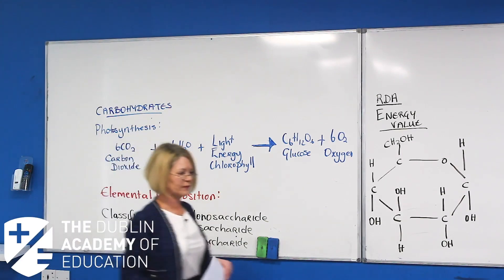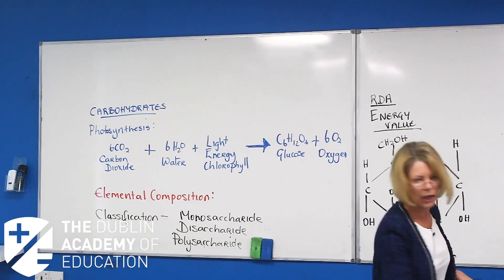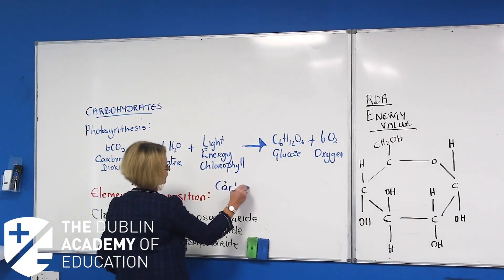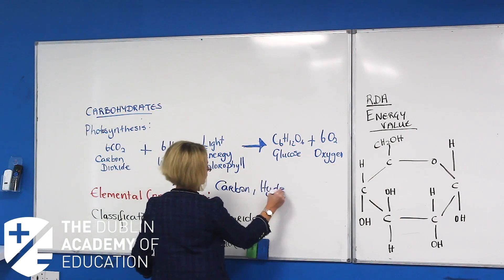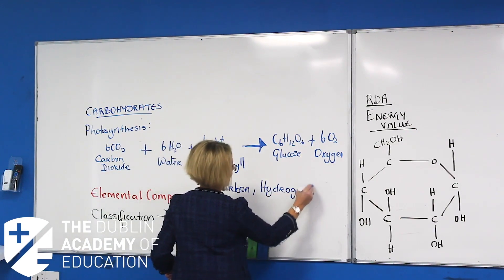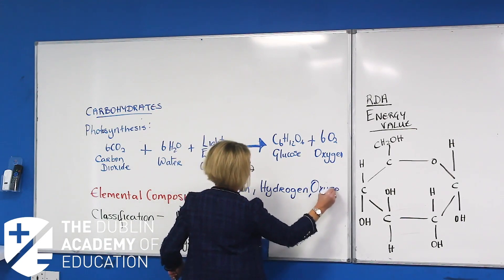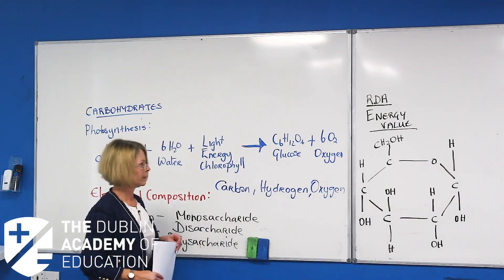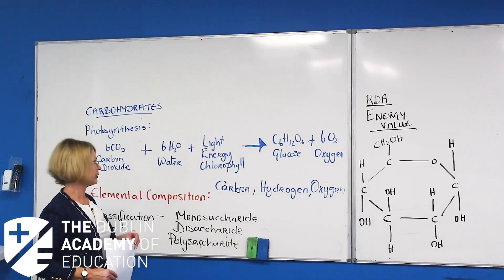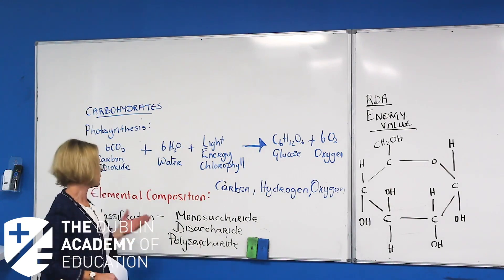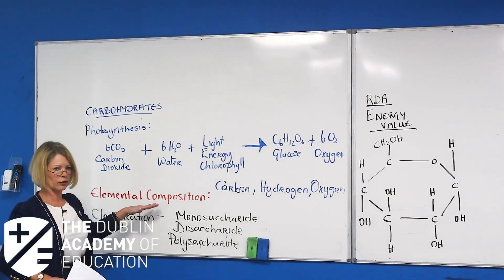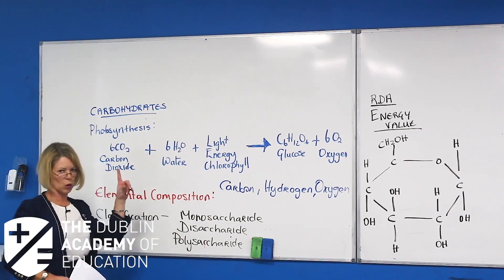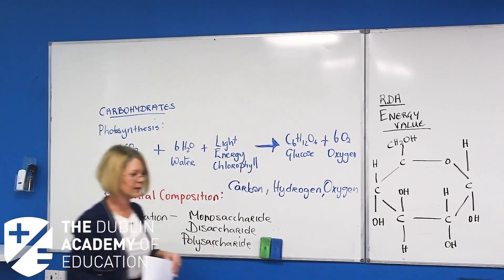Looking at the elemental composition of carbohydrates: carbohydrates contain the elements carbon, hydrogen, and oxygen — three elements. The classification — how we divide them — for Leaving Cert we divide them according to structure. They're classified as monosaccharides, mono meaning one, so this is one simple unit.